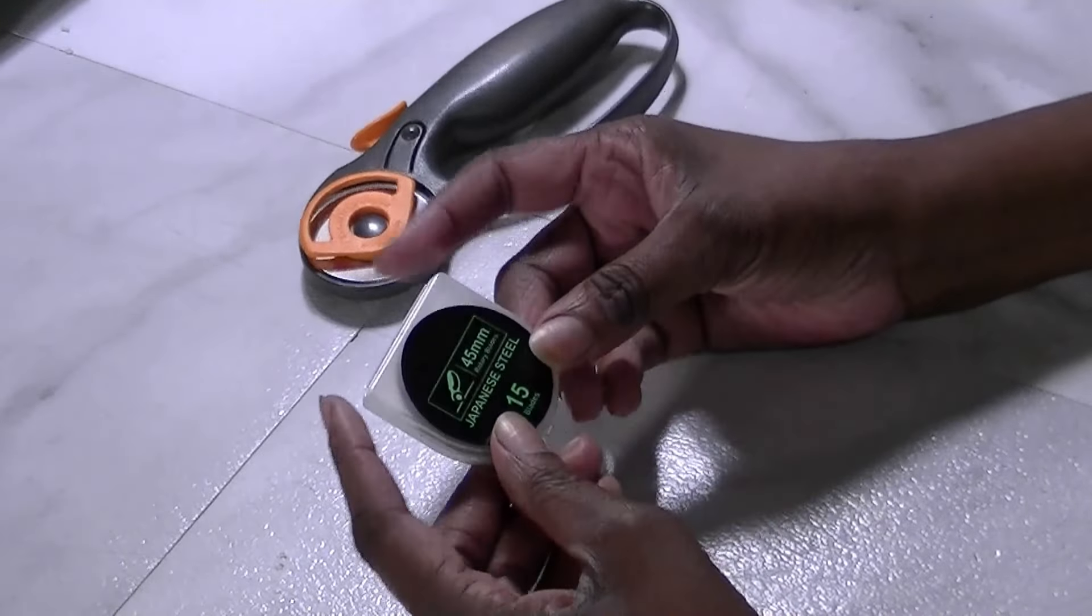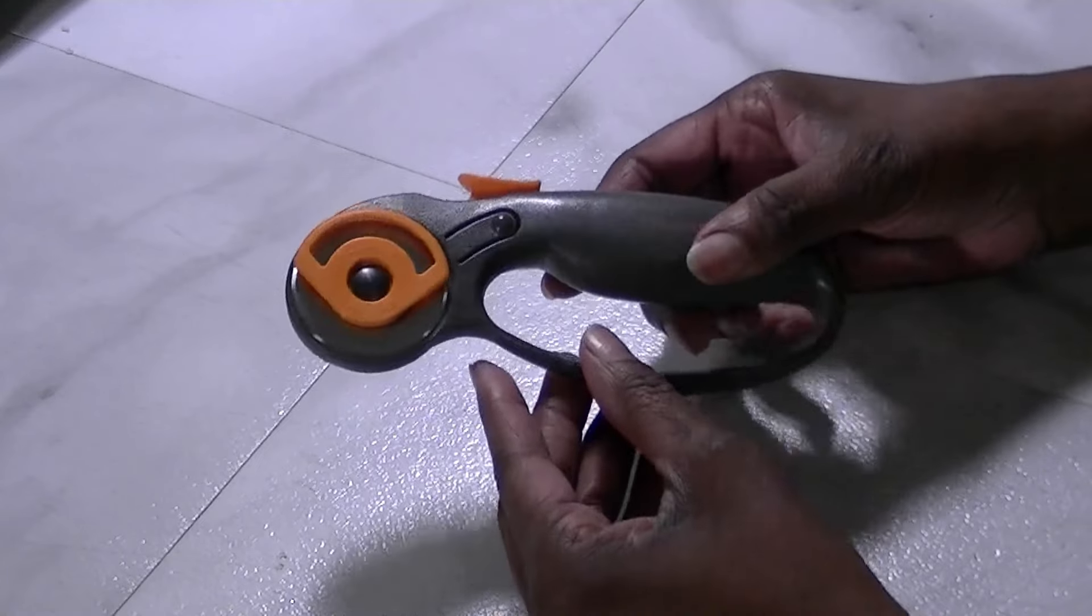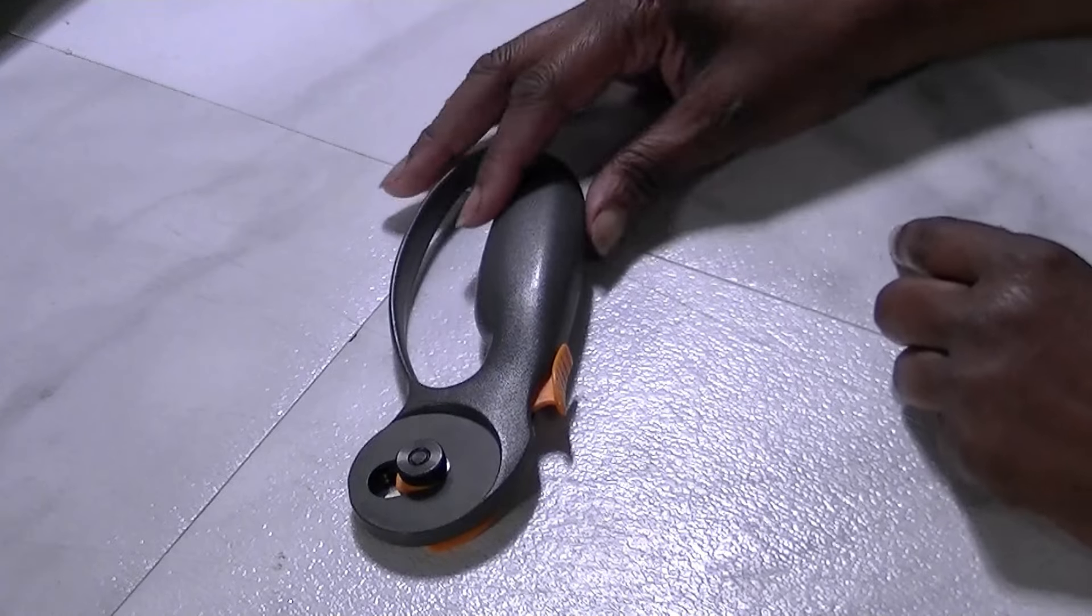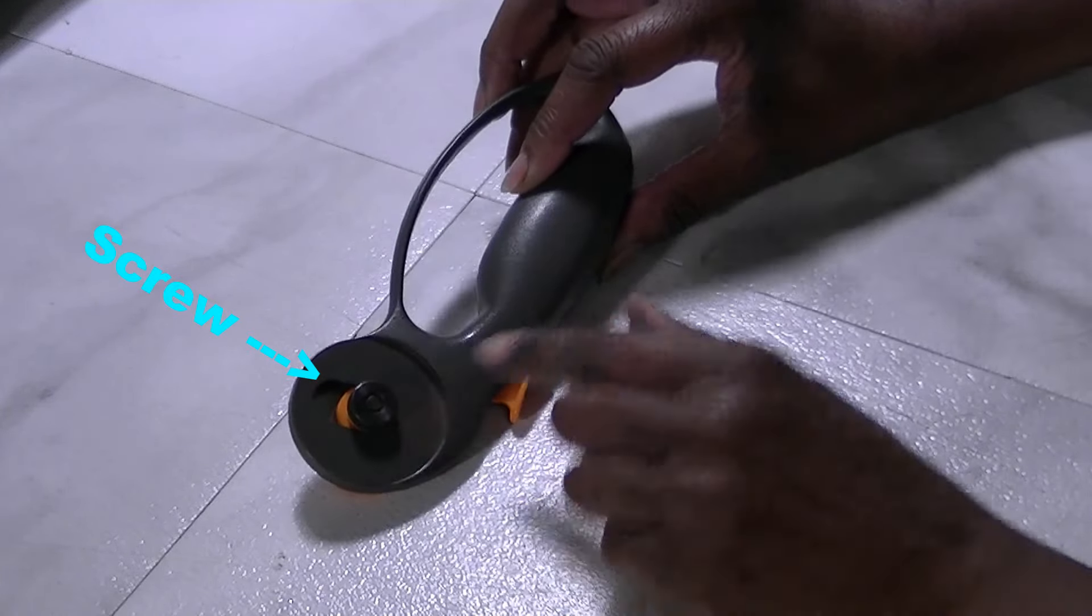In order to change the blade on your rotary cutter, we're going to take the rotary cutter and turn it over where you see the little knob to unwind.